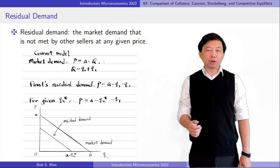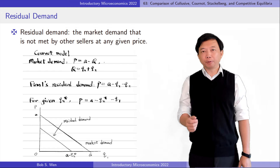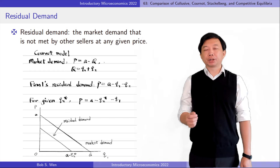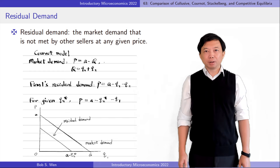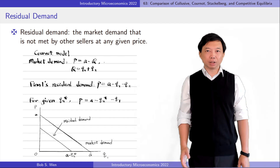So for any given other firm's quantity Q2 star, Firm 1's residual demand is P equals A minus Q2 star minus Q1. We see that Firm 1's residual demand curve has the same slope as the market demand curve, which is minus 1, but it shifts to the left by Firm 2's quantity Q2 star.